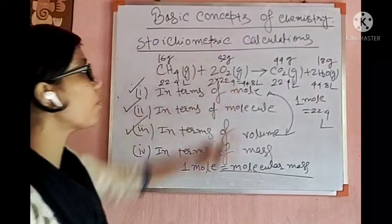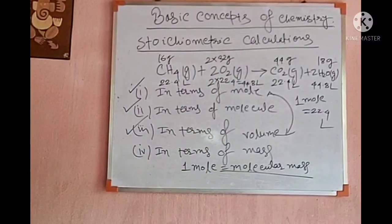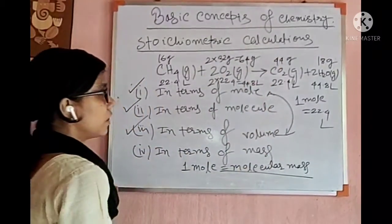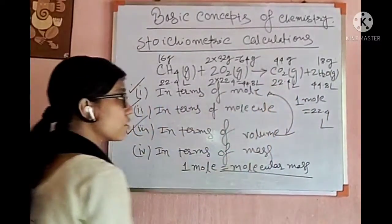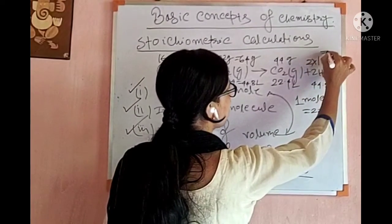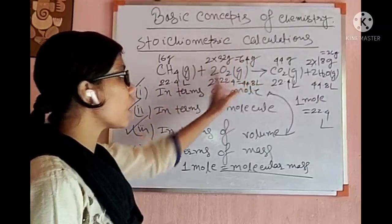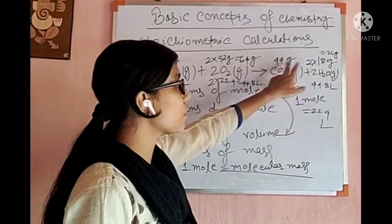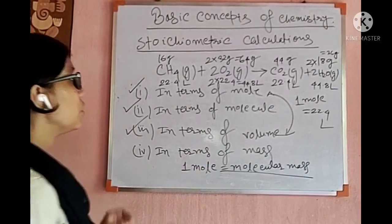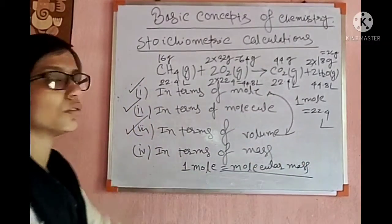Since there are 2 moles of oxygen, that is 2 × 32 = 64 grams. Carbon dioxide is 1 mole, that is 44 grams. Water is 2 moles, so 2 × 18 = 36 grams. So in terms of mass: 16 grams of methane reacts with 64 grams of oxygen giving 44 grams of carbon dioxide and 36 grams of water. To represent stoichiometry with respect to volume and mass, find the relationships: 1 mole = 22.4 L, and 1 mole = molecular mass.